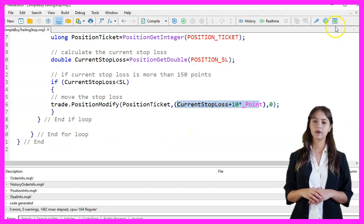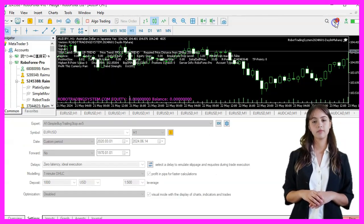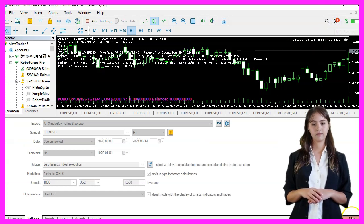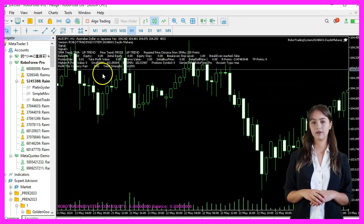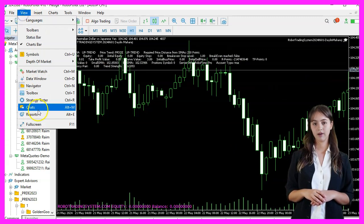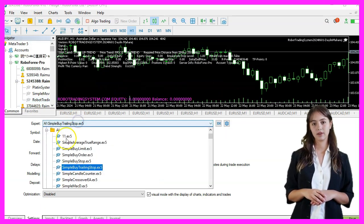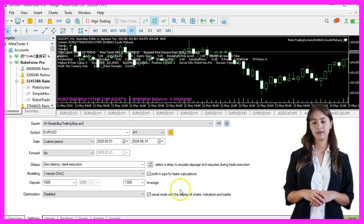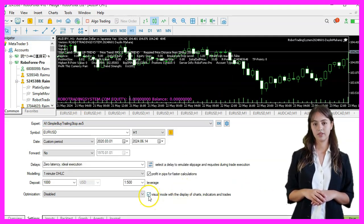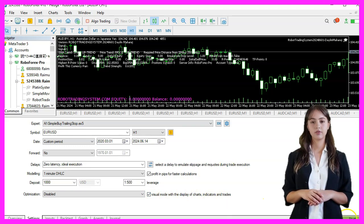If everything works, we go back to MetaTrader by pressing F4 or clicking on the icon. Back in MetaTrader, we press Ctrl and R to start the Strategy Tester, pick the Expert Advisor that we have just created, enable the Visual mode, and start a Strategy Test.